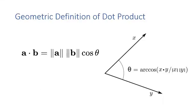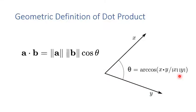Here is the geometric definition of dot product. The dot product can be viewed as the magnitude of the first vector times the magnitude of the second vector times cosine(θ), where θ is the angle between the two vectors. So we can use the dot product and the magnitudes to calculate the angle θ between two vectors.